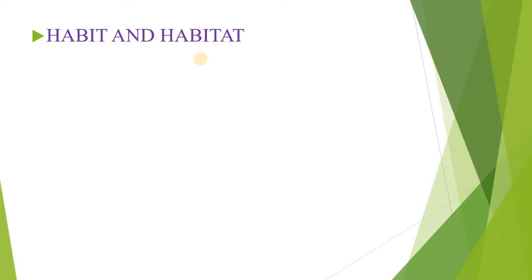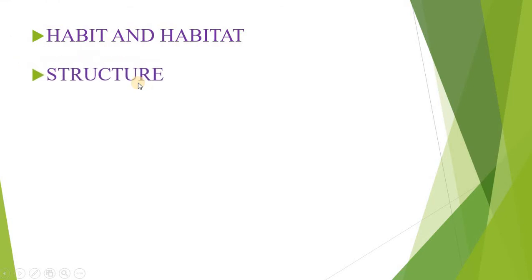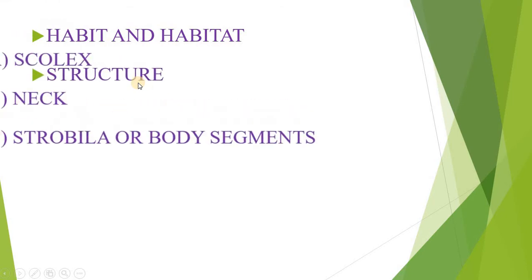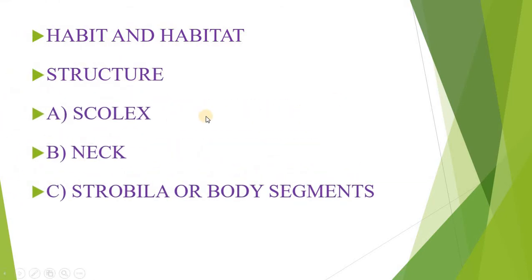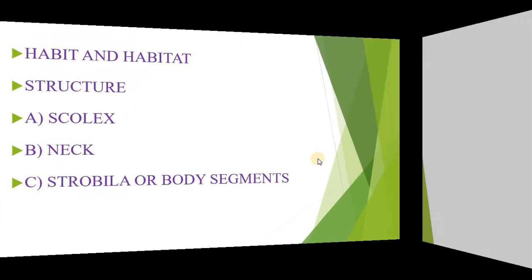In Taenia solium we will be discussing about its habit and habitat and its body structure, which is divided into three parts: the scolex part, neck, and strobila or body segments. In the upcoming slides we will discuss these one by one.